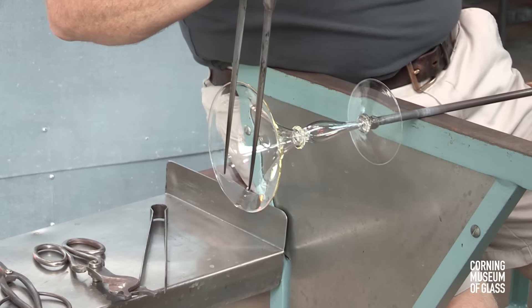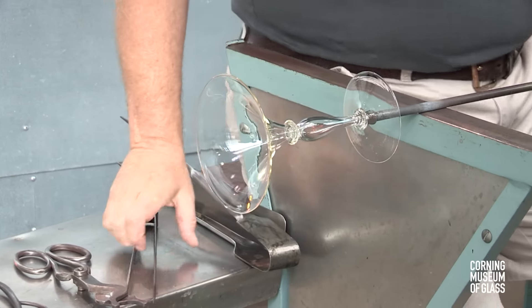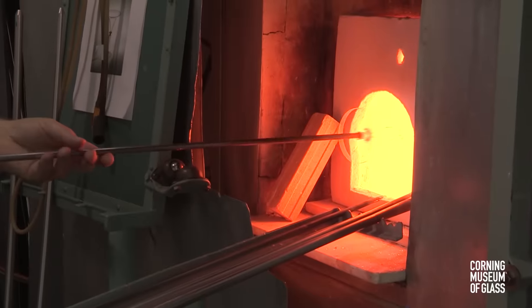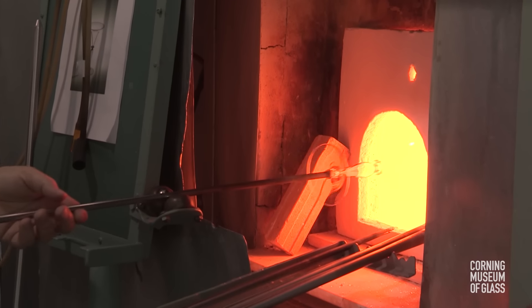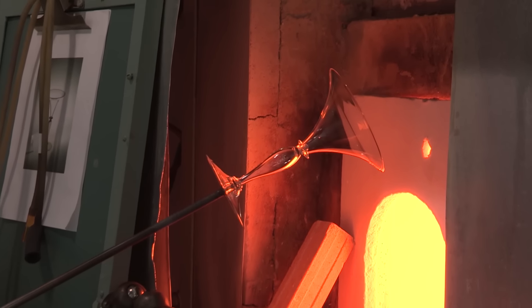The edge is made perfectly flat. The vessel flashed in the furnace one last time, and it's broken free of the punty, and placed in the annealing oven for gradual cooling.